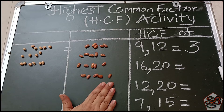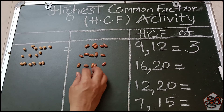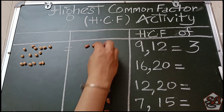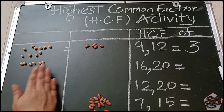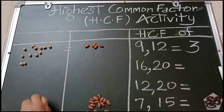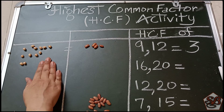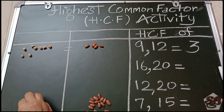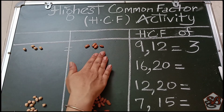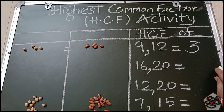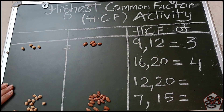Now 20 is the bigger number and 16 is the smaller number. So from 20 we subtract 16, leaving 4 here and 16 there. We subtract 4 from 16, leaving 12 and 4. Again 12 is bigger, so we take out 4 again. Now we have 8 and 4. We take out 4 again, leaving equal numbers — 4 and 4. So our HCF for 16 and 20 is 4.